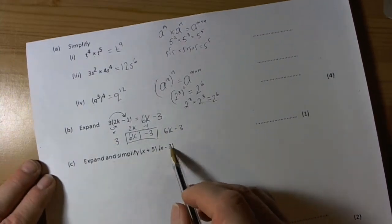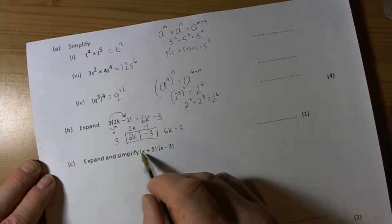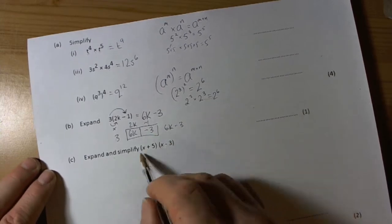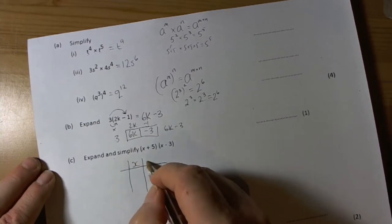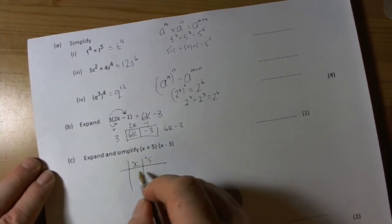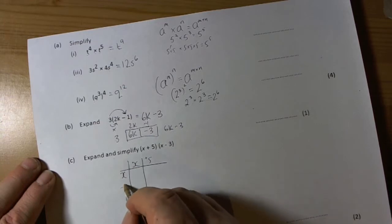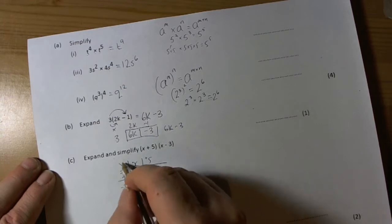Again here we've got expand and simplify. So we've got lots of methods that we could use to do this. It's a double bracket. Some people like the grid, so we'll go for the grid. So we've got x and positive 5, we've got x and negative 3, and we're timesing.